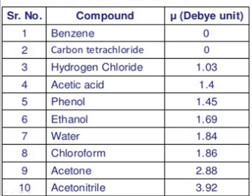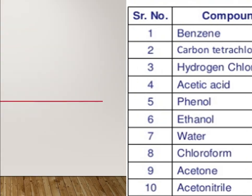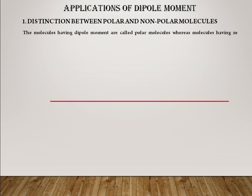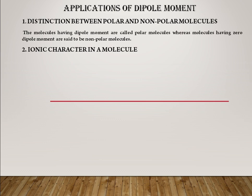These are examples of a few compounds along with their dielectric constants. In the applications of dipole moment, the first application is the distinction between polar and non-polar molecules. Molecules having a dipole moment are called polar molecules, whereas molecules having a zero dipole moment are said to be non-polar molecules. If a molecule shows a dipole moment, it is polar in nature; if it does not, it is non-polar.